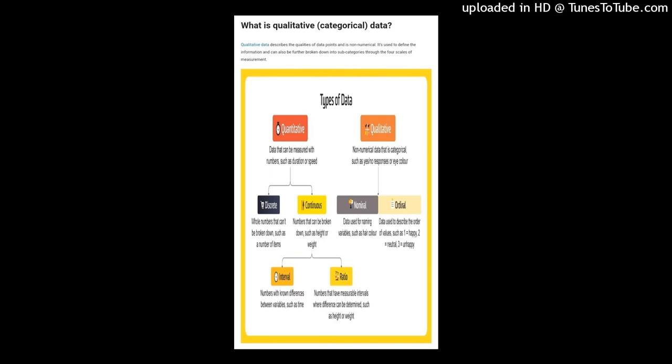Examples of nominal data include eye color and country of birth. Nominal data can be broken down into three subcategories: nominal with order — such as cold, warm, hot, and very hot; nominal without order — such as male and female; and dichotomous — defined by having only two categories or levels, such as yes or no.